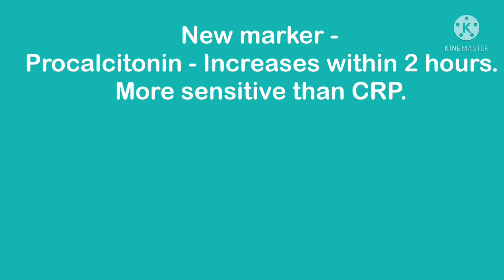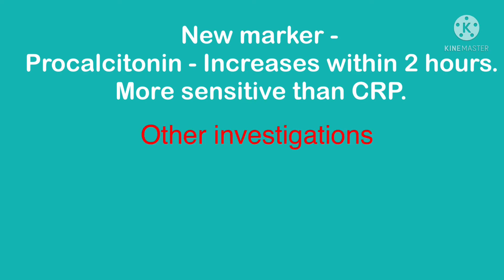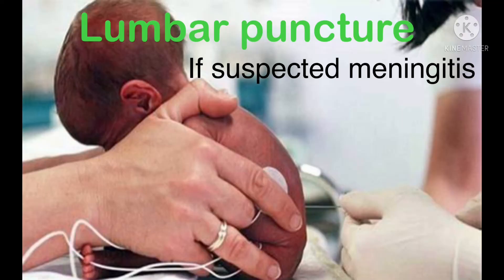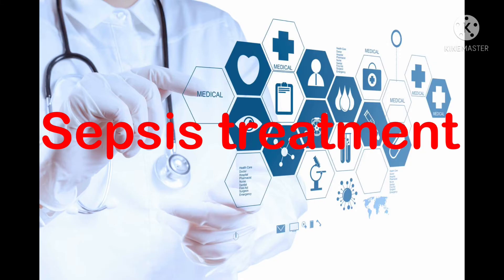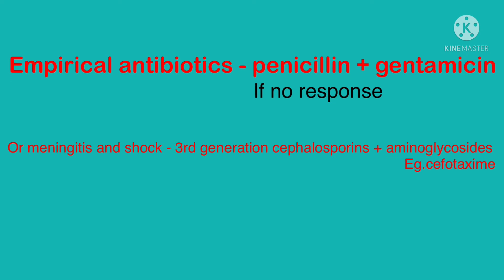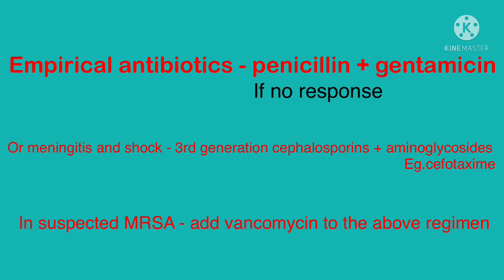New markers like procalcitonin increase within two hours of insult and are more sensitive than CRP. Other investigations include chest X-ray and lumbar puncture if meningitis is suspected. For treatment, empirical antibiotics like penicillin and gentamicin are preferred.